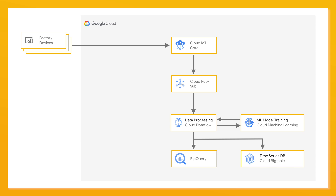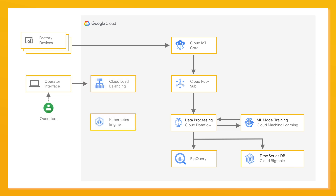In addition to collecting data from the machinery, we also collect data from other sources — for example, from operators through an operator interface that we have on the factory floor. If a machine is down or there's a production problem, the operator is able to add data or annotations that allows us to go back and do further analysis, and that comes back in through the cloud as well. Much of that data then gets stored into Google Cloud SQL, and we can pull that data out using BigQuery.